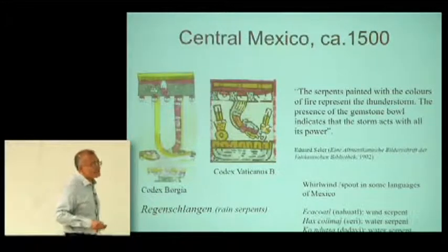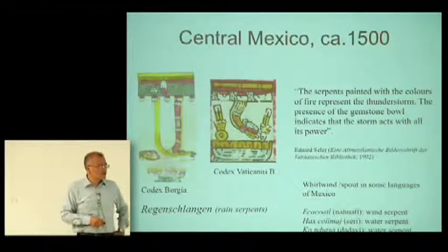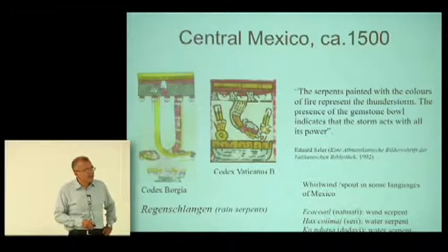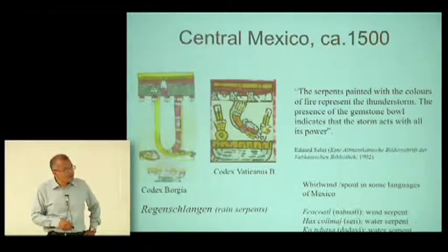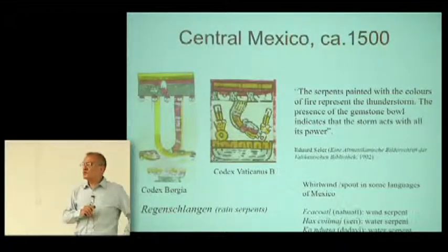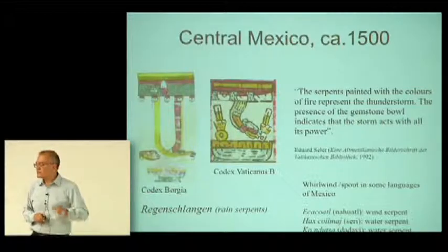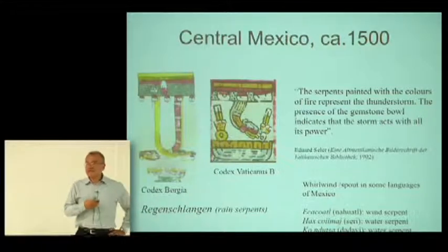If we look at the words in the languages of Mexico — there are about 100 still spoken today — we see that all the words used to speak about whirlwind or waterspout include the term for serpent: 'cacoatl' in central Mexico, and similar terms in northern and southern Mexico. So you will find in many anthropological books references to 'culebras' — that's the Spanish word for serpent. In Mexico they don't speak about tornados or trombas, they speak about culebras.